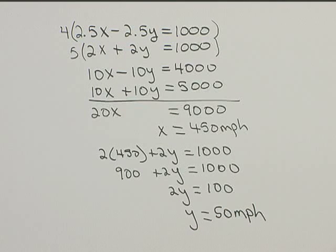So the speed of our plane is 450 miles per hour, and the speed of the wind is 50 miles per hour.